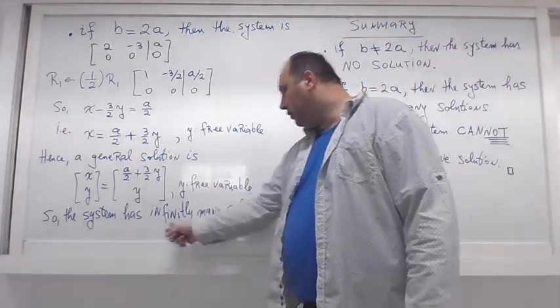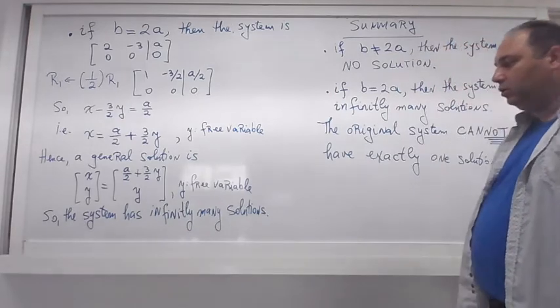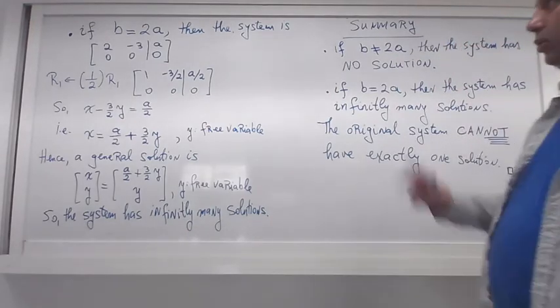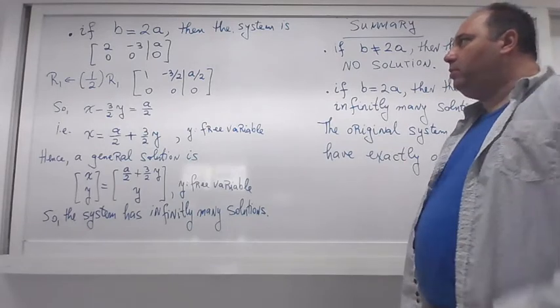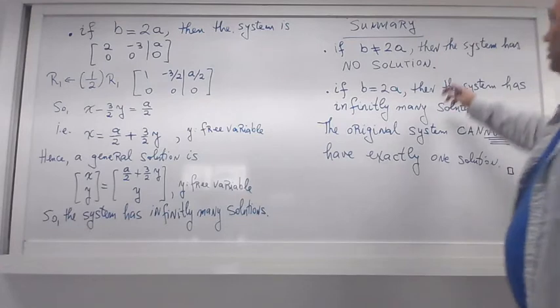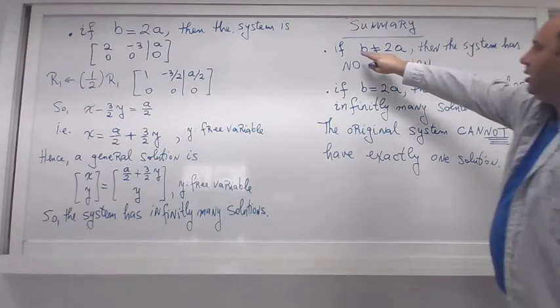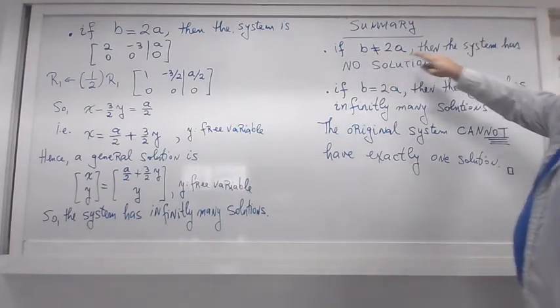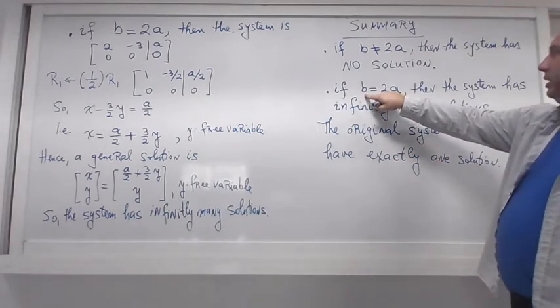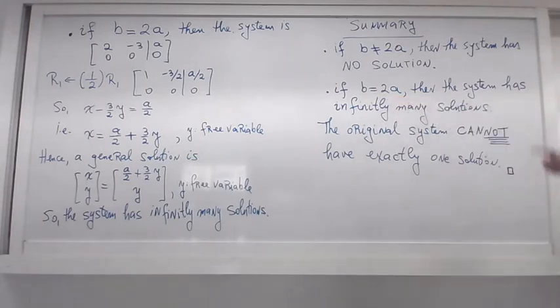Fantastic. So we have two options: b different from 2a, in which case we see here if b is different from 2a, then the system has no solution at all because we produce a contradiction.